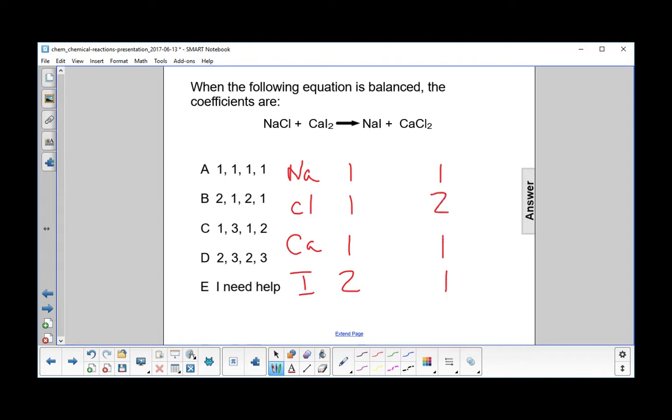So let's look at the iodine first. We need to have two on the right side. So we're going to multiply this by two, which now gives us two sodiums.